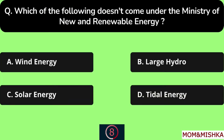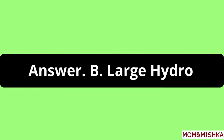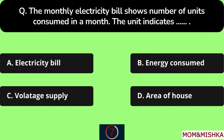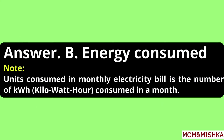Which of the following does not come under the Ministry of New and Renewable Energy? Large Hydro, Option B. The monthly electricity bill shows number of units consumed in a month. The unit indicates energy consumed, Option B. The units consumed in the monthly electricity bill is the number of kilowatt-hours consumed in a month.